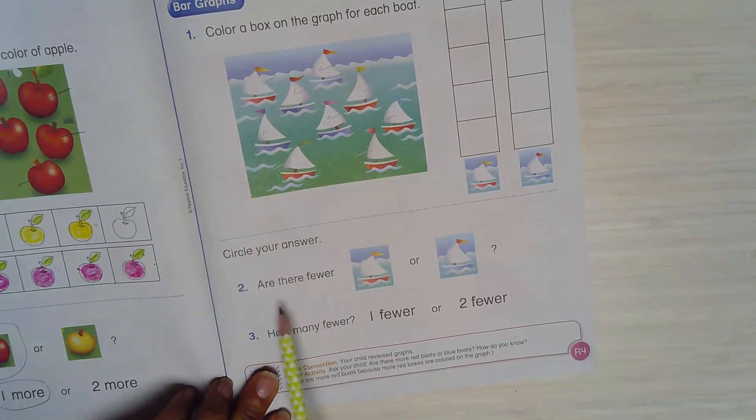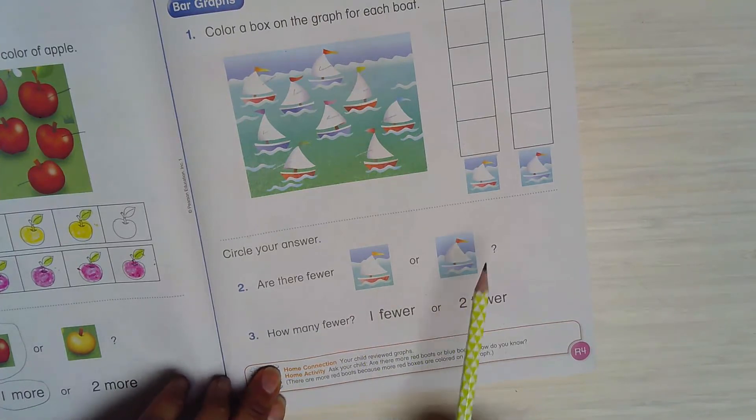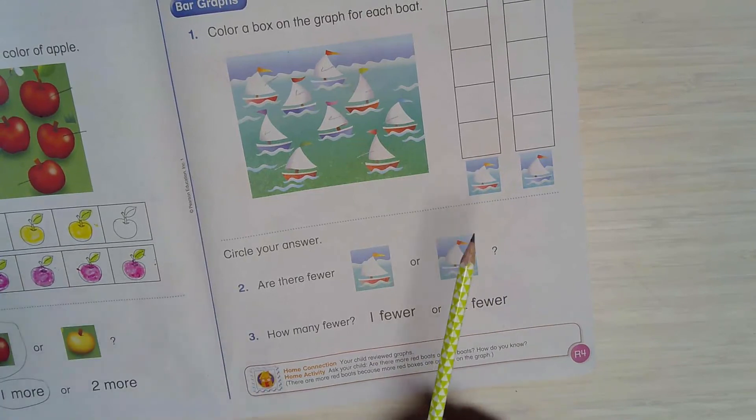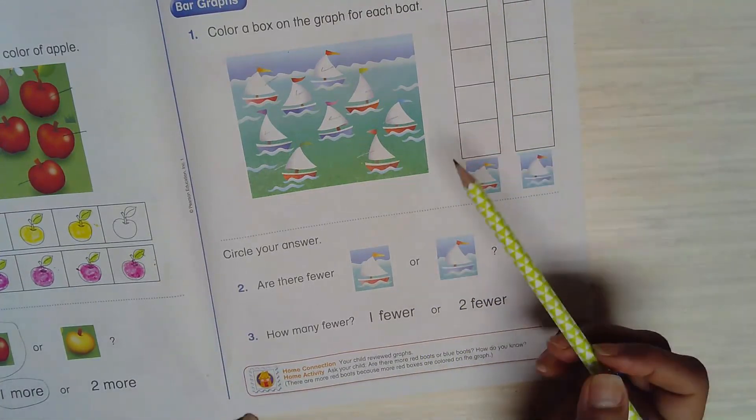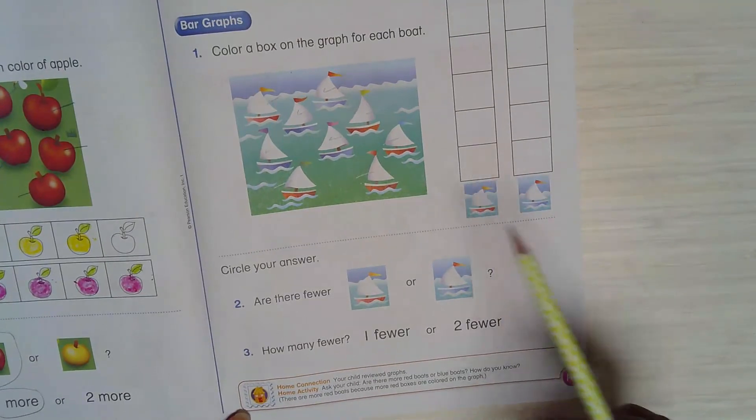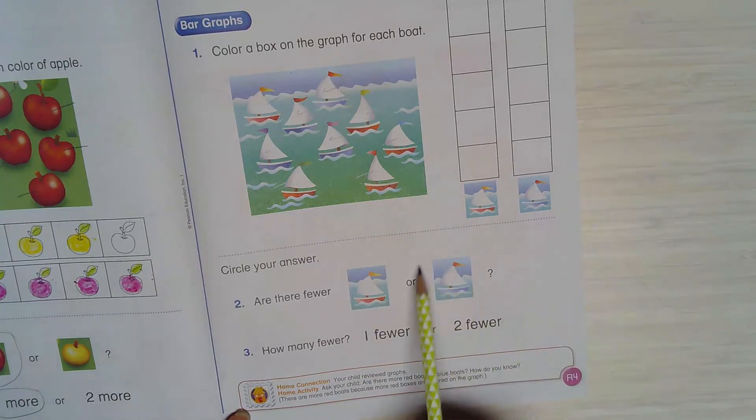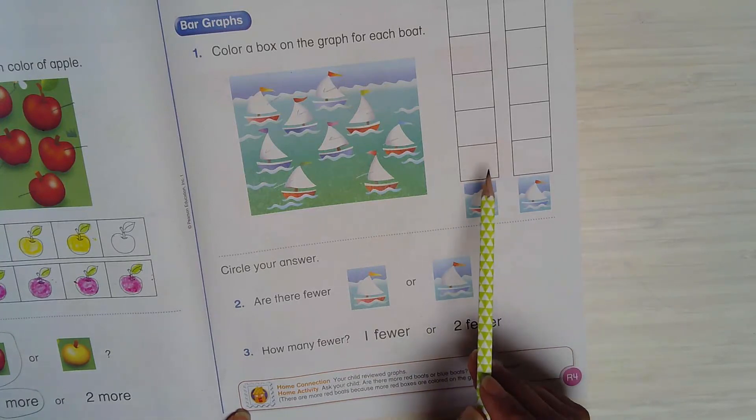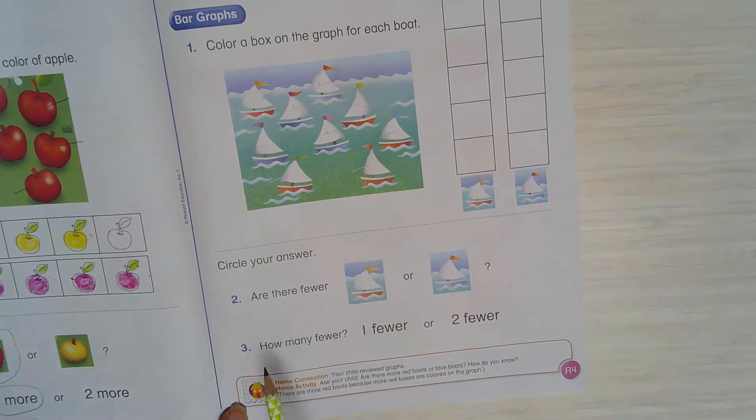Circle your answer - are there fewer red or blue boats? Which one have less? Fewer. So when you color this, it would be easy for you to see which one is less or fewer. So you're gonna circle it. If it's less blue, you're gonna circle the blue boat. If it's fewer or less red boats, you're gonna circle the red boat picture.